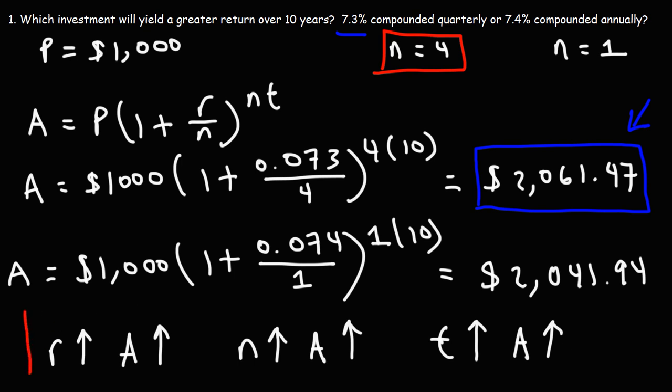So increase in any one of these things, R, N, or T, that's going to increase your final value and will also increase your rate of return.